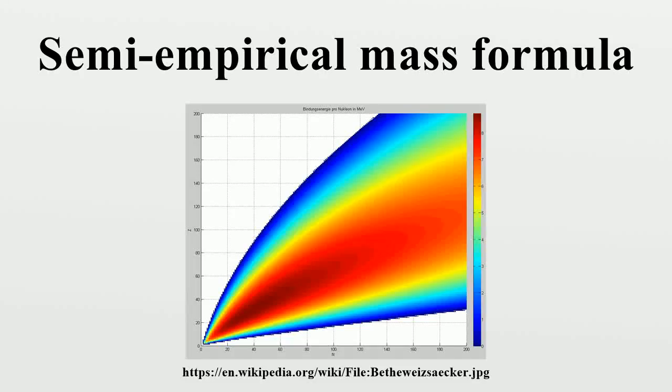In nuclear physics, the semi-empirical mass formula is used to approximate the mass and various other properties of an atomic nucleus from its number of protons and neutrons.